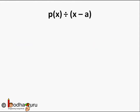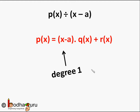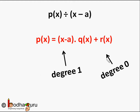Now say g(x), the divisor polynomial, is a linear polynomial — that is, its degree is 1 — such as x - a. So p(x) is divided by x - a. We rewrite the equation as p(x) = (x - a)·q(x) + r(x). Since the degree of x - a is 1, the degree of the remainder r(x) must be 0, because we stop division only when the degree of the remainder is less than the divisor. So r(x) is a constant, which we write simply as r.